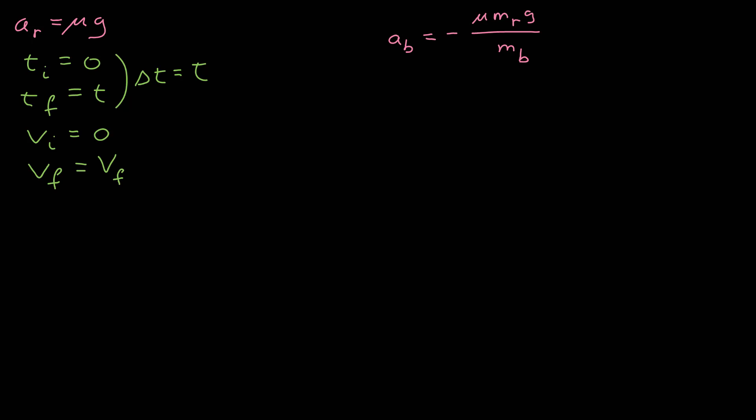The initial velocity of red in the x dimension is zero, and the final velocity I've called v sub f. The final velocity equals the initial velocity, which is zero, plus the acceleration times the time interval t.